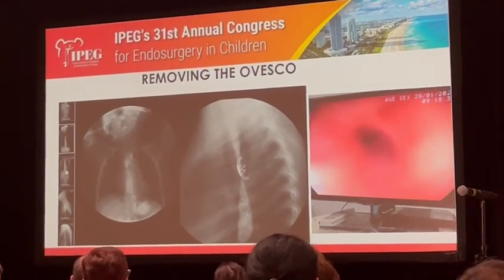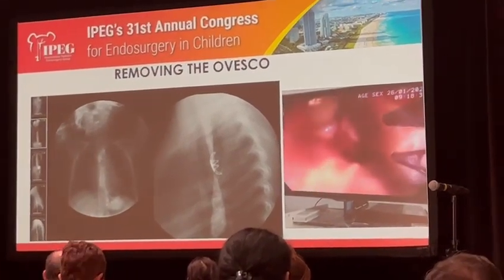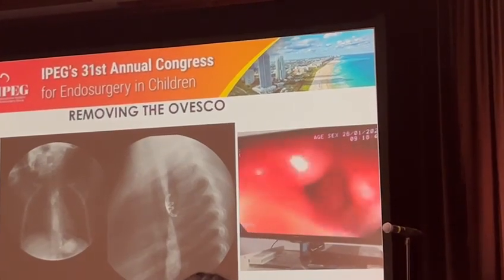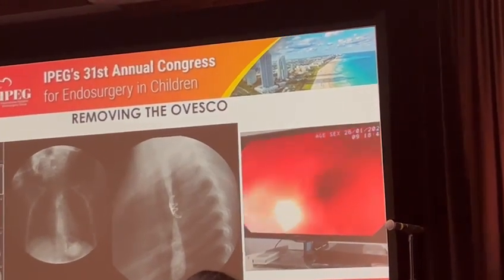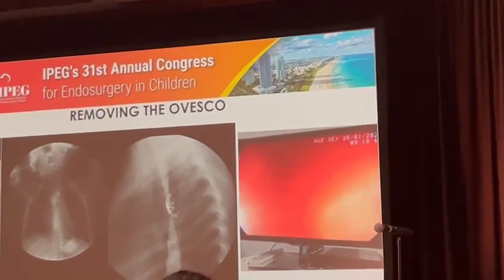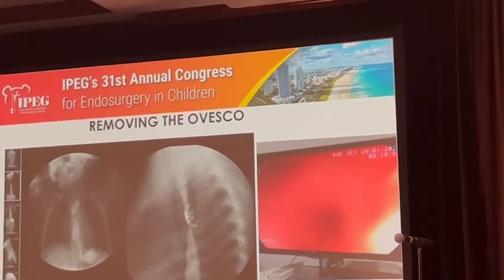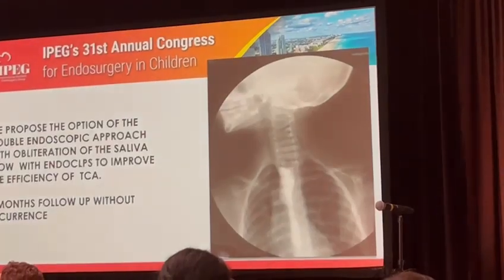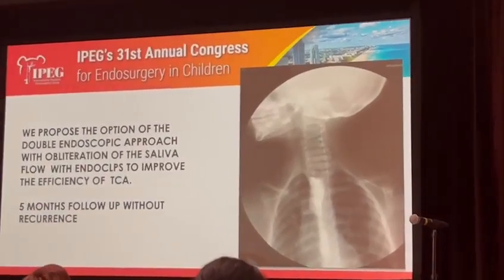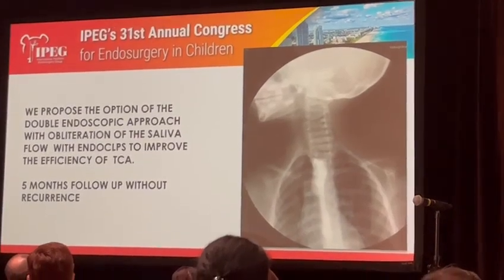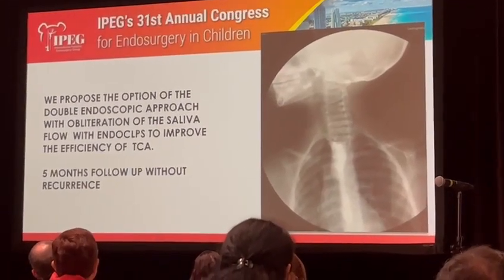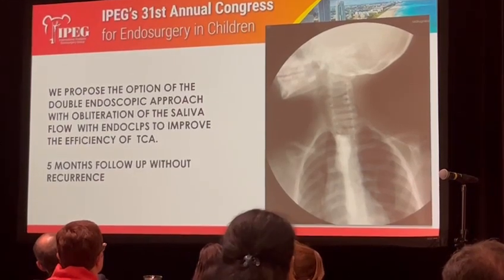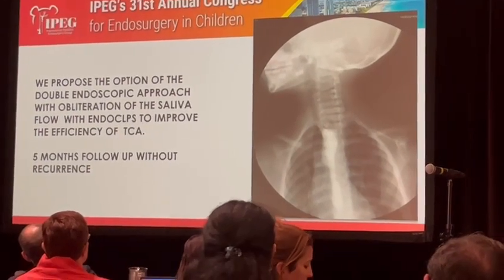Finally, this is an excerpt. You look at the Ovesco, and in this video, one month later, we retrieved the Ovesco clips. We propose the option of the double endoscopic approach with the diversion of saliva flow using endoclips to improve the efficiency of the TCA. Five months follow-up without recurrence.